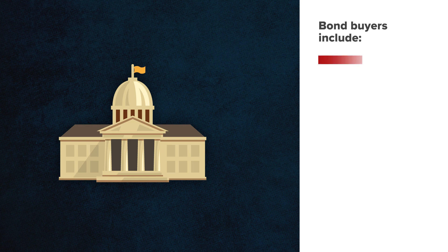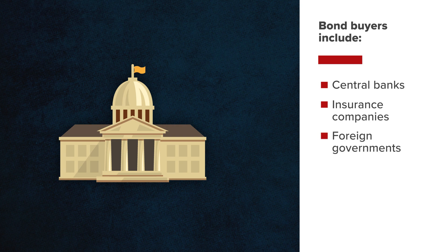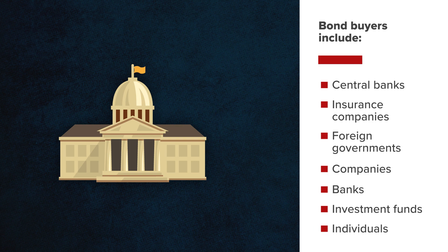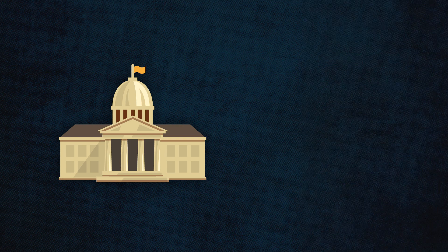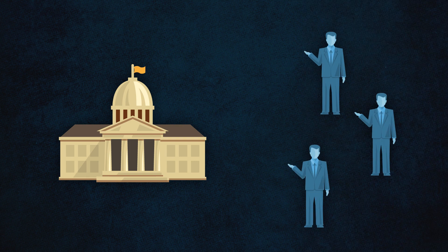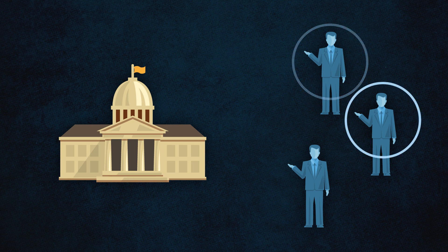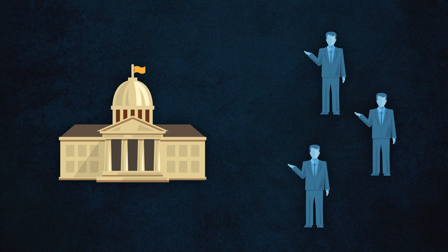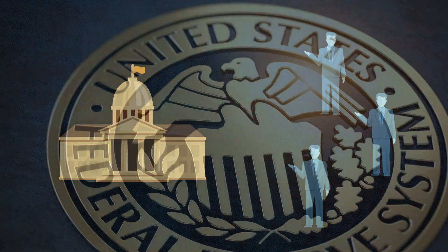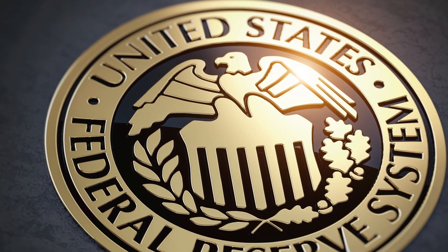The buyers of Treasury bonds receive interest payments. Buyers include central banks, insurance companies, foreign governments, companies, banks, investment funds, individuals, etc. If interest rates are generally higher across the curve, that means the government needs to pay more in interest when it issues bonds. Higher rates benefit lenders at the expense of borrowers. In this case, the government is a borrower.